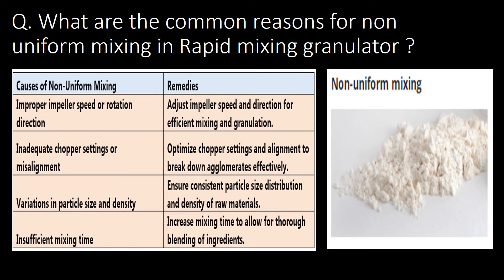What are the common reasons for non-uniform mixing in Rapid Mixing Granulator? You can refer to the table below for common causes of non-uniform mixing and remedies. The four very commonly observed causes are: first, improper impeller speed or rotation direction; second, inadequate chopper setting or misalignment; third, variations in particle size and density; and fourth, insufficient mixing time.